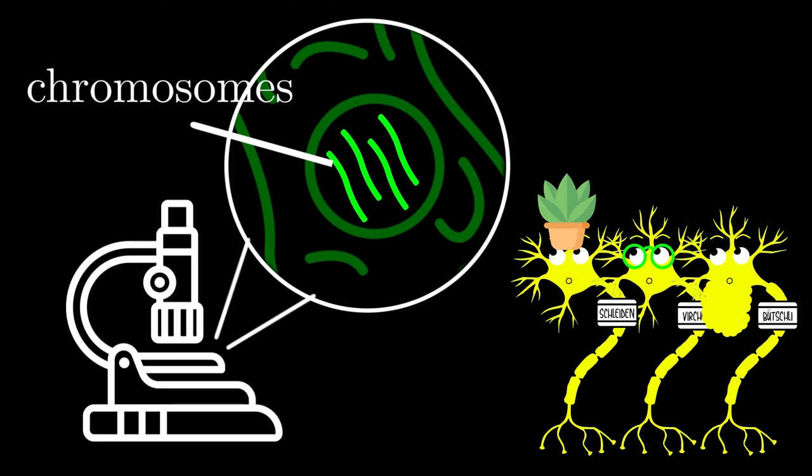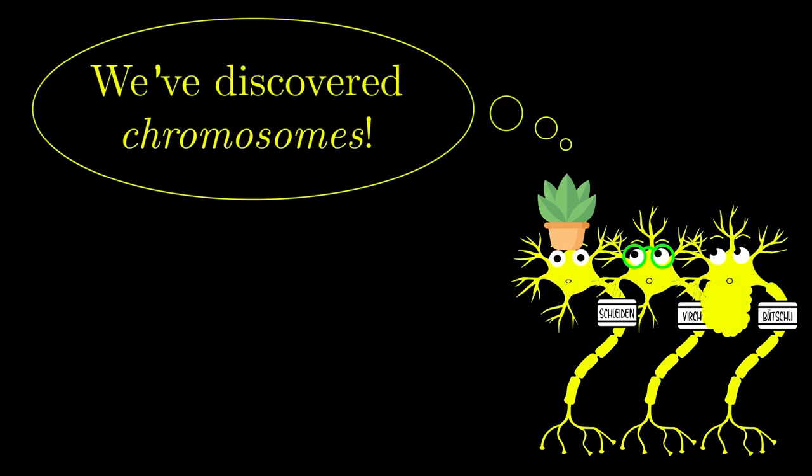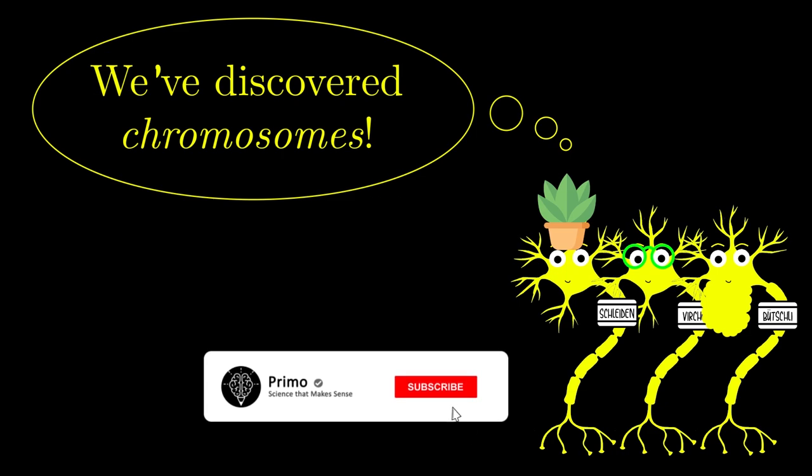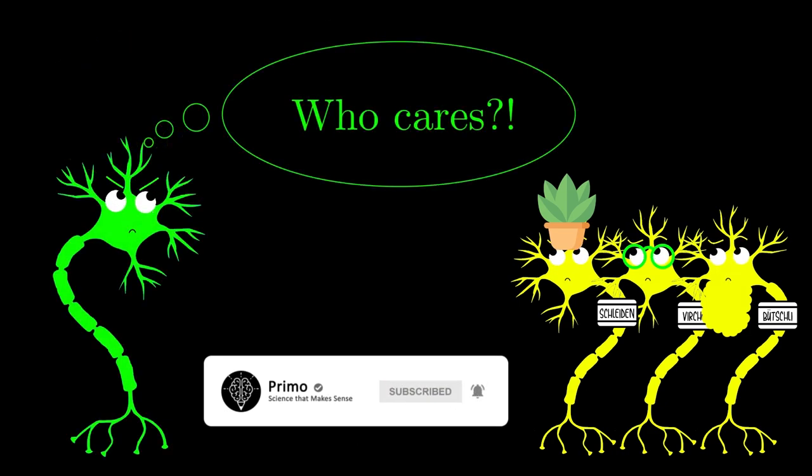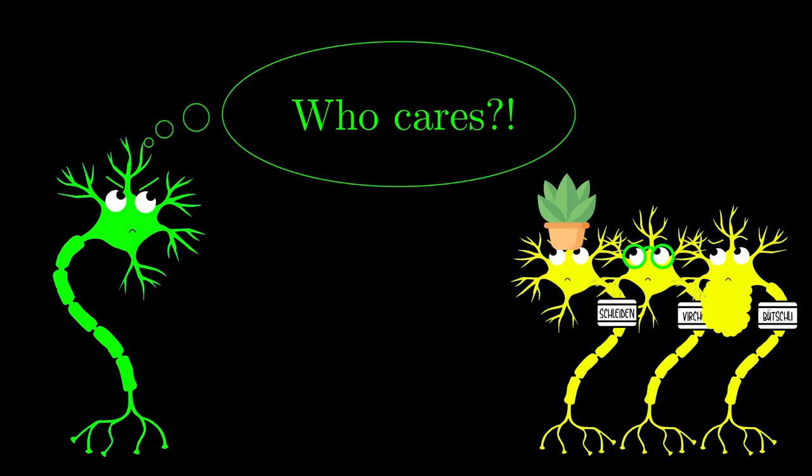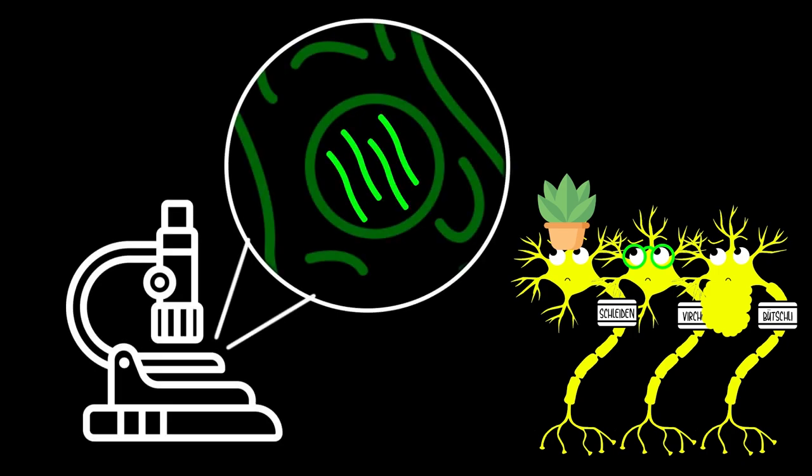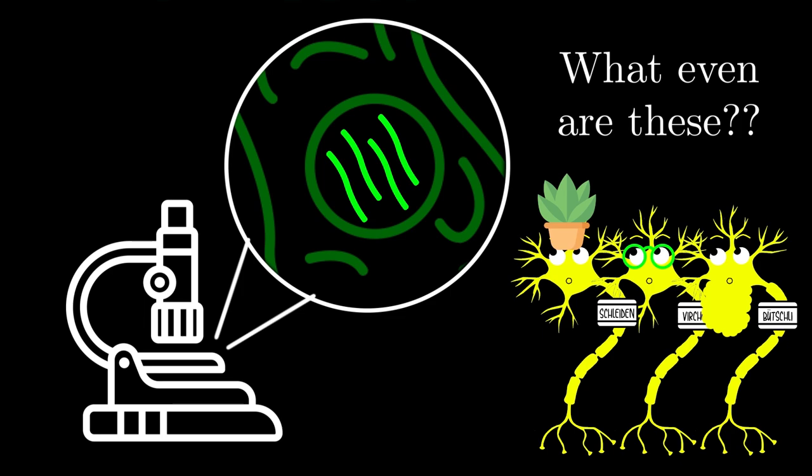So Schleiden, Virchow, and Buchli were excited. They discovered chromosomes. And the rest of the world was like, so what? All you did was find these colored things. You know nothing about them. And they were right. Schleiden, Virchow, and Buchli didn't know anything about these chromosomes, what they did, or even what they were made of.